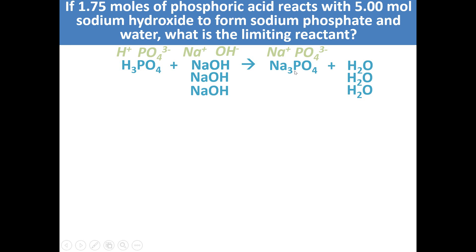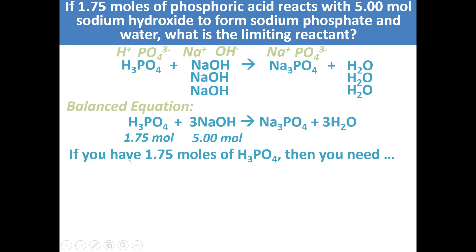Now we can identify the limiting reactant. We have 1.75 moles of phosphoric acid being reacted with 5 moles of NaOH. Now I am just going to choose one of these values, doesn't matter which one. I always like to start off with the first one.